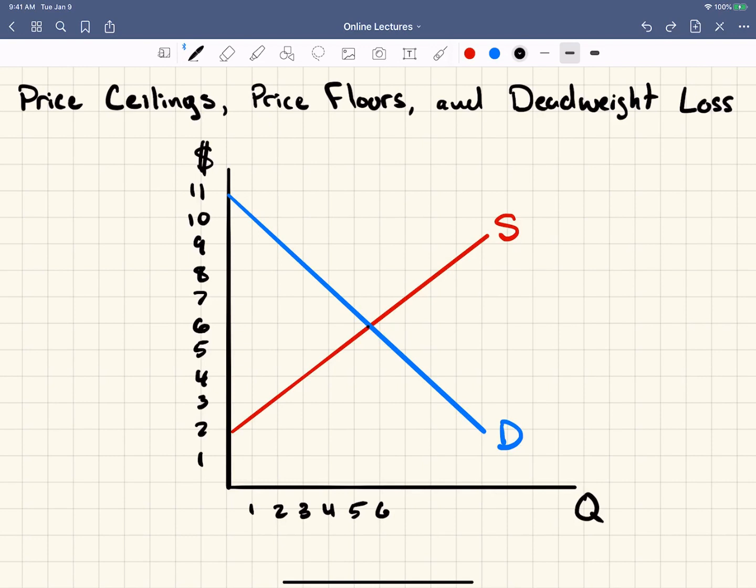If the government sets a price ceiling, they're going to say for this market, we're not going to allow the price of this good or service to rise above, let's say, hypothetically, four dollars. Here's a price ceiling. So the price of this good or service is not going to rise above four dollars.